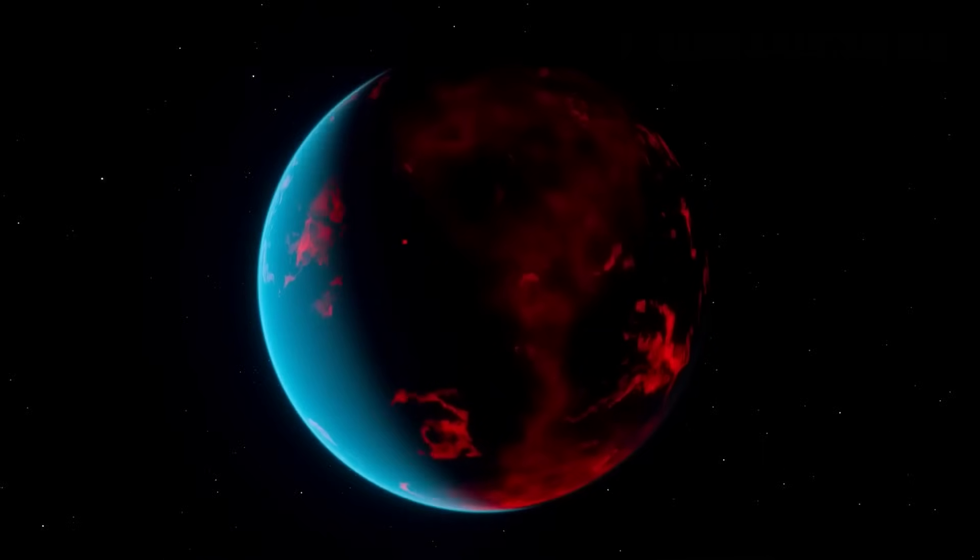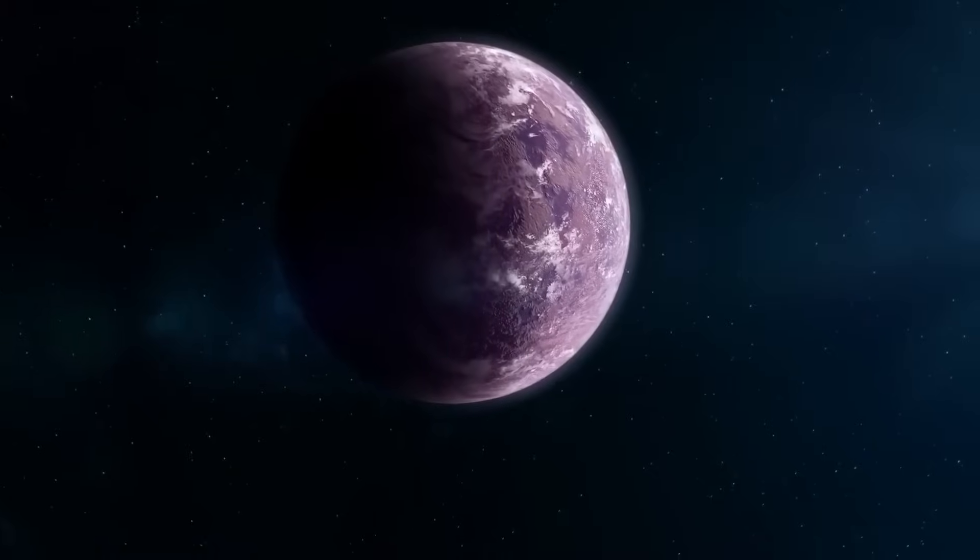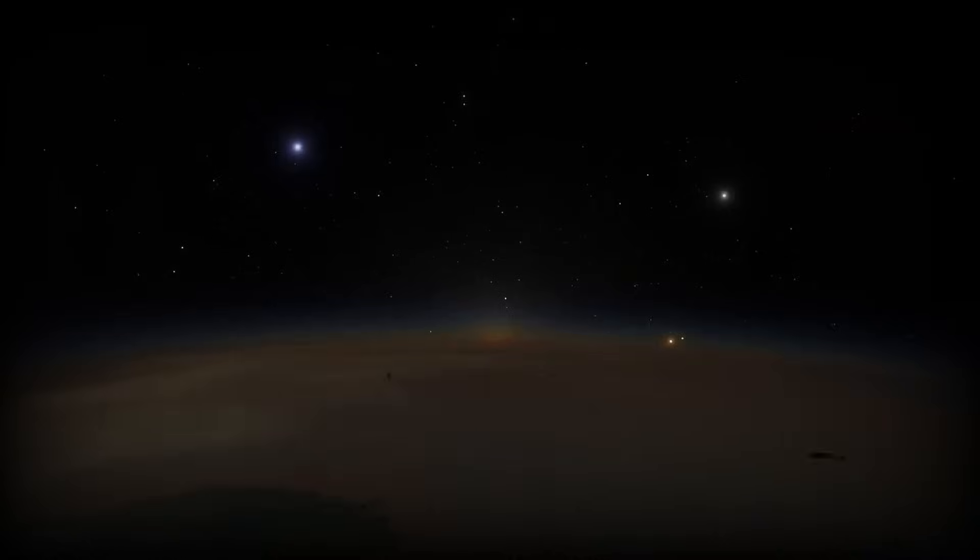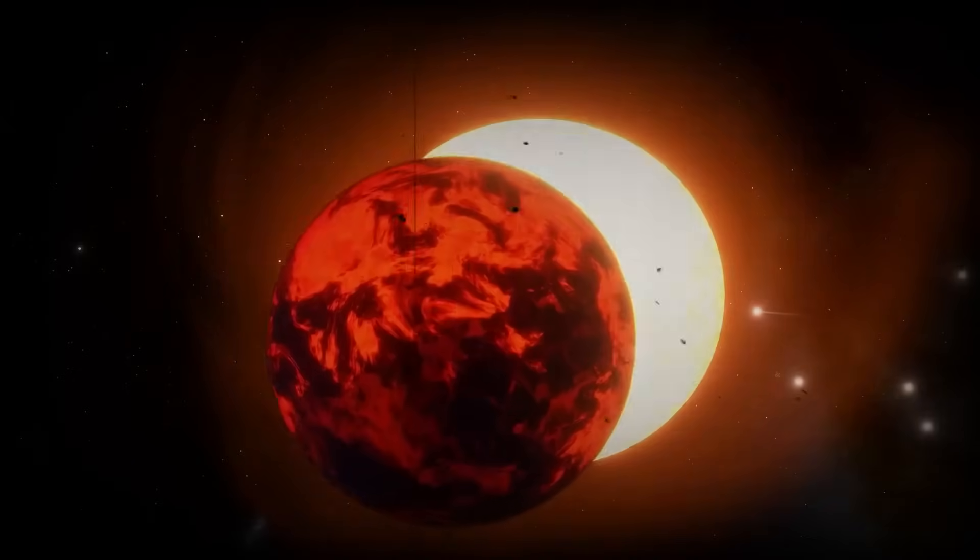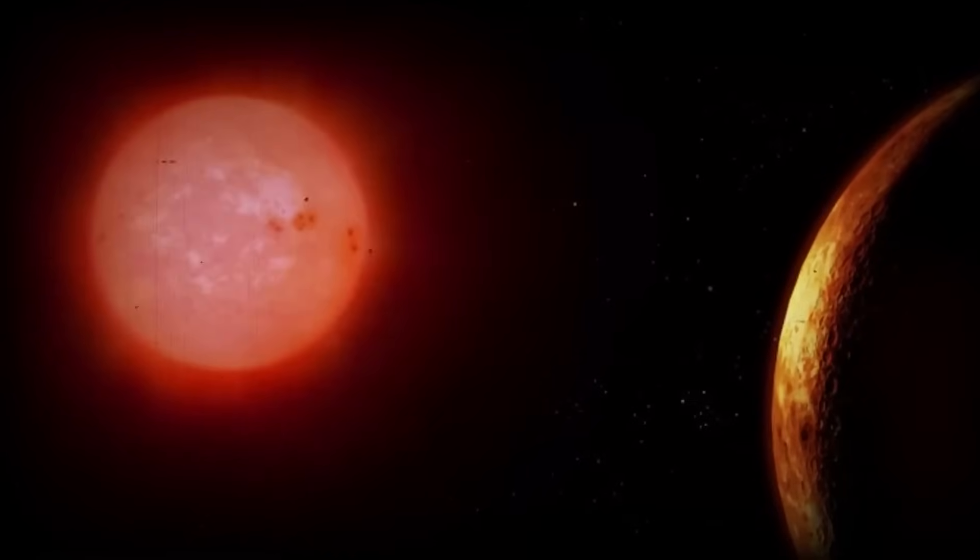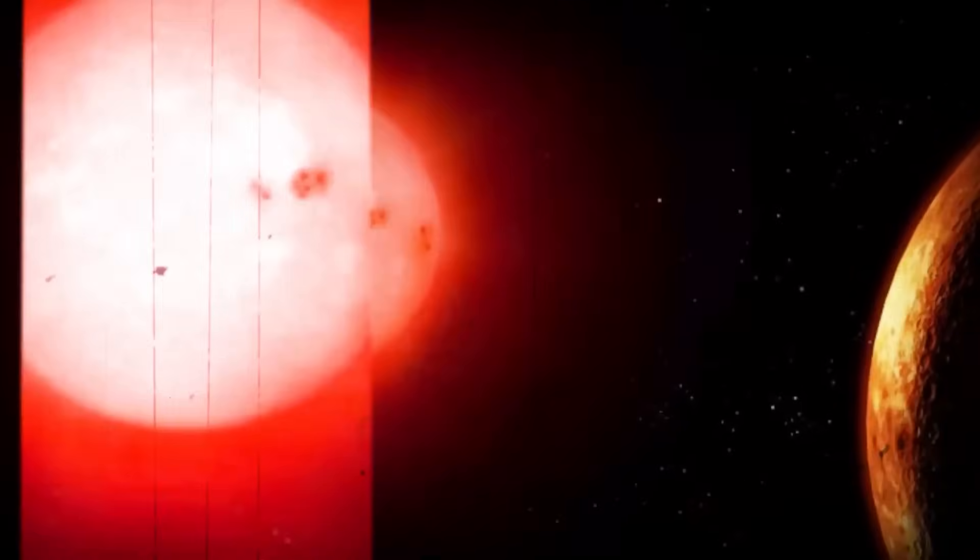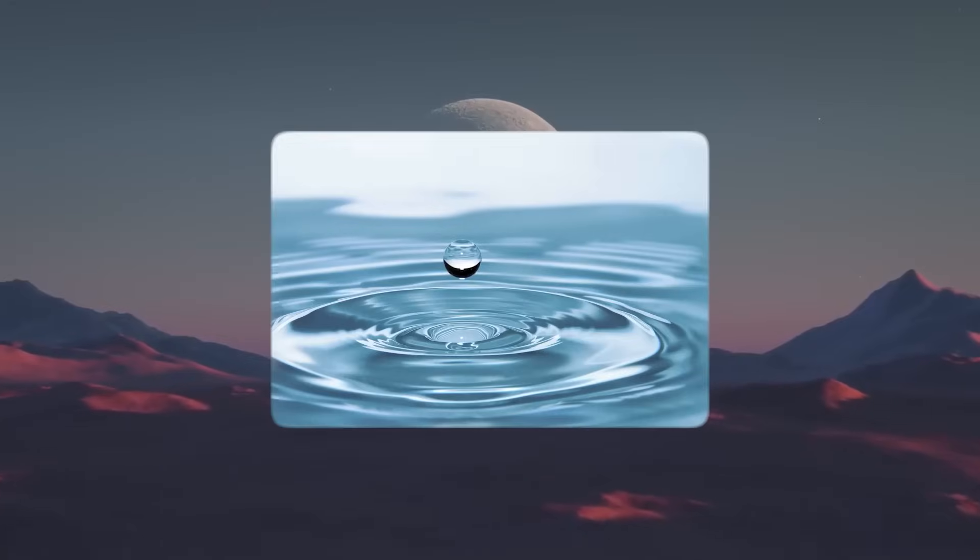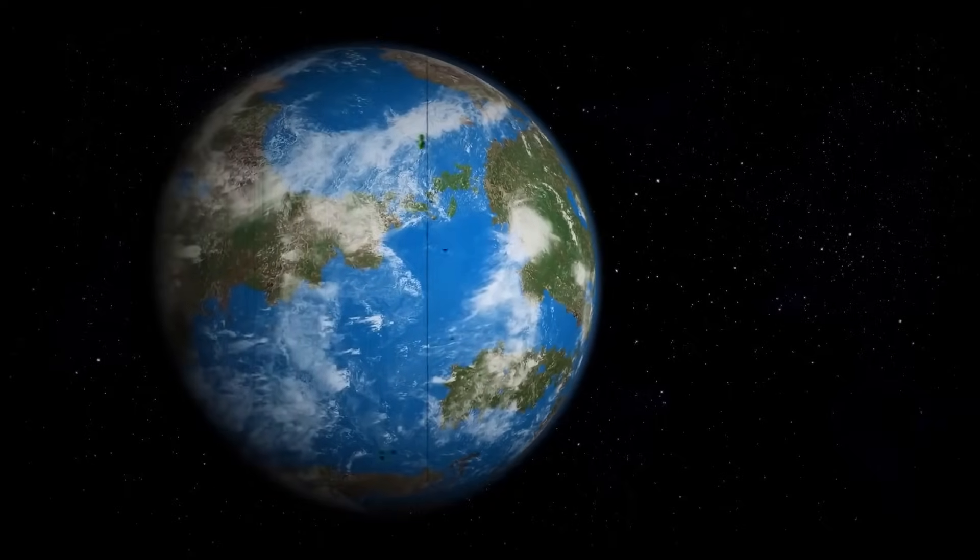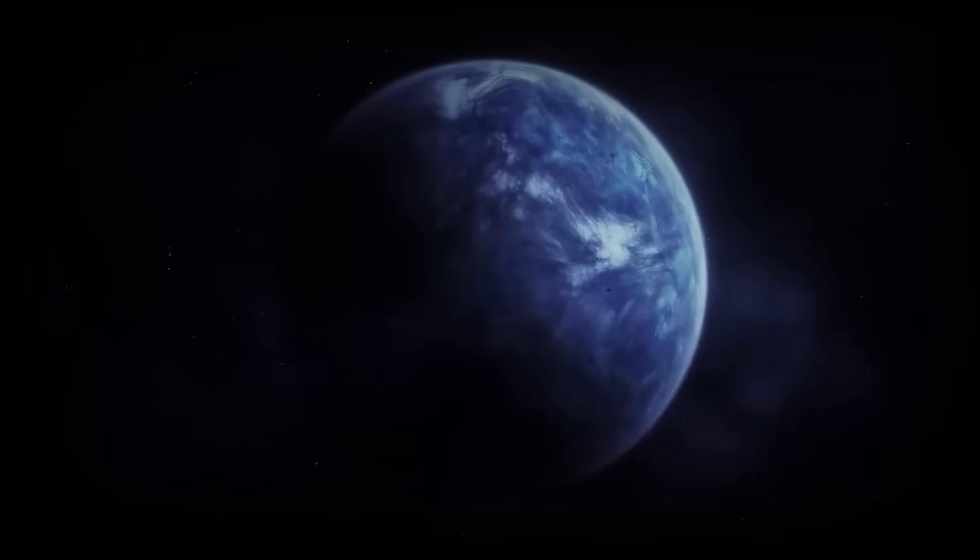TOI-700 is a calm red dwarf star, smaller and cooler than our sun but with a much longer lifespan. This slow-burning star hosts at least four planets, and two of them—TOI-700 d and e—are especially exciting. Both lie in the habitable zone. TOI-700 d, the first discovered, is almost exactly the size of Earth and completes an orbit every 37 days.